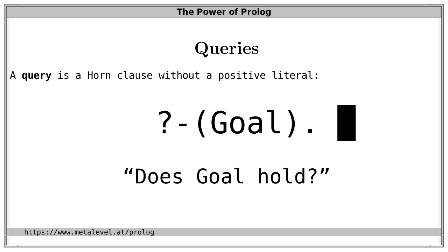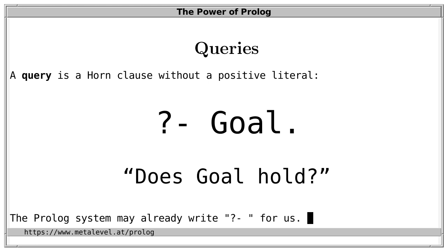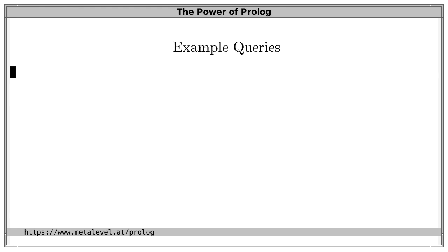This functional notation is the same term — and we can of course use it too. But since question-mark-dash and also colon-dash are standard prefix operators, we can omit the round brackets in these cases. In fact, when we start a Prolog system, the system may already write question-mark-dash for us, so we only have to enter a goal. So let's post our first query.